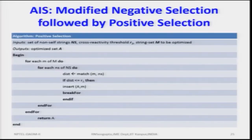With that background, we continue the 56th lecture. In the positive selection method, you build a set of non-self strings — non-self meaning not maximum matching, furthest away from the set — based on which prediction is done. The input self or non-self strings, named NS, will have a cross-reactivity threshold. If the threshold is or is not crossed, matching is determined accordingly.